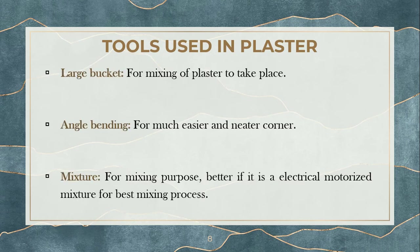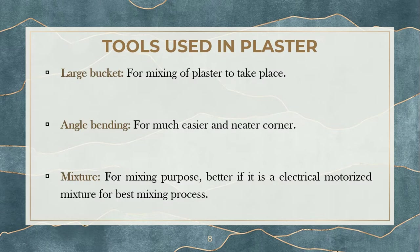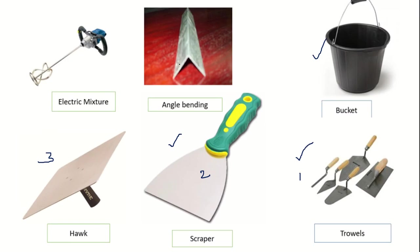The next tool is the bucket, which is used for mixing. Then we have the angle bead — this is used to give a neat appearance to the plaster at corners. And next you have an electric mixer, the last tool, which is used to mix all the ingredients uniformly. So those are the six important plastering tools: trowel, scraper, hawk, bucket, angle bead, and mixer.